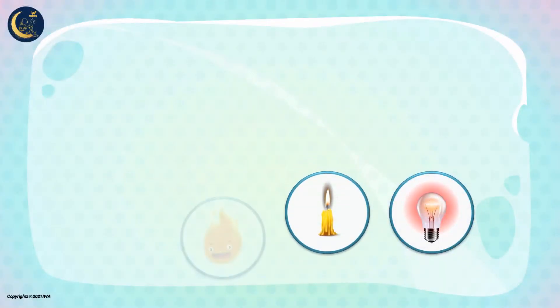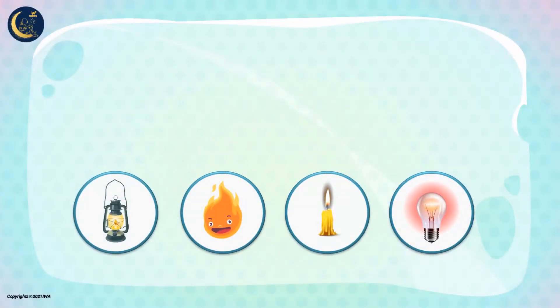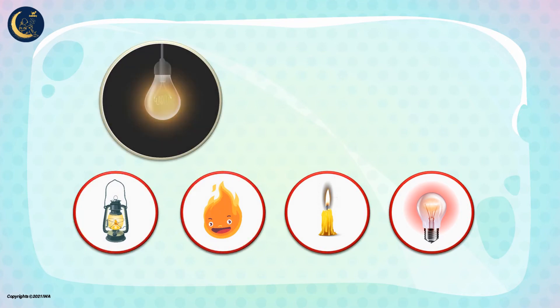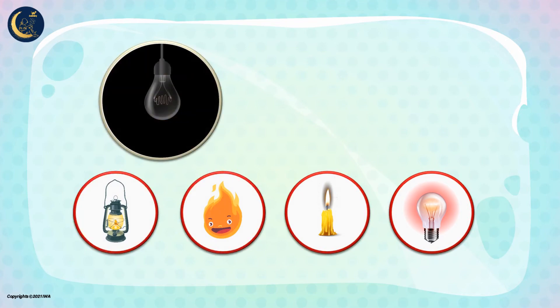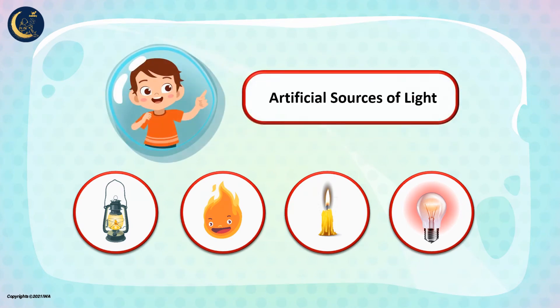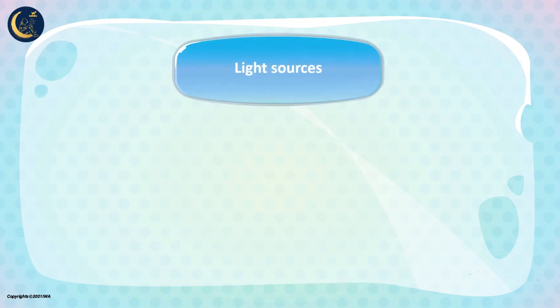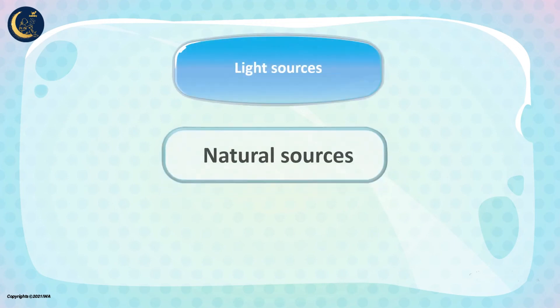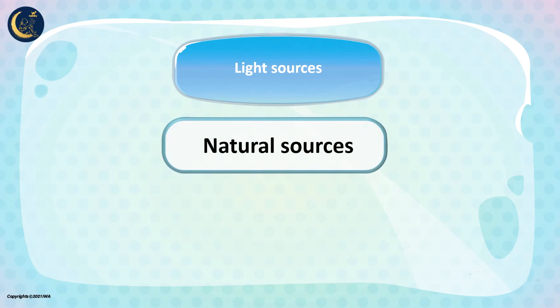Notice, my friends, that the light bulb, candles, fire, and lantern can be turned on and off by humans. That is why we call these sources of light artificial sources of light. So, we can conclude that the sources of light can be classified into natural sources and artificial sources.